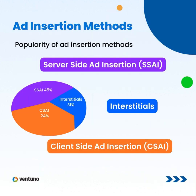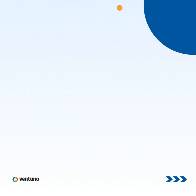Video content publishers were surveyed about how they deliver advertisements to users. The most popular approach was server-side ad insertion at 45%, followed by interstitials at 31%, and client-side ad insertion at 24%. Now let's understand how CSI works.